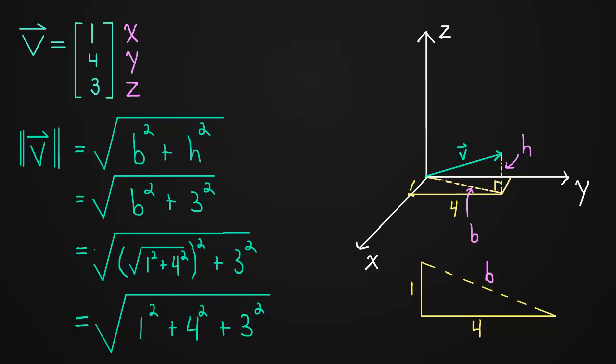Now compare that to the components of v. You'll see that the length of v is simply the square root of the sum of the squares of the components. And that's kind of a lot of words to say all at once. But we just take each component, we square it, we add them together, and we take the square root.